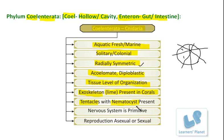Besides this, in these organisms the nervous system is present. It is beginning here and is of a primitive type. By primitive type we mean that a developed brain, cord, or nerves are not developed over there. But a network of nerve cells is present which helps in the control and coordination processes in these organisms.